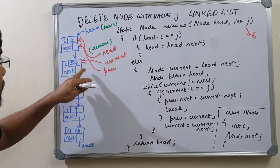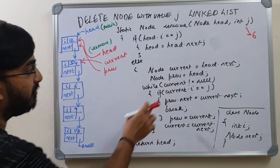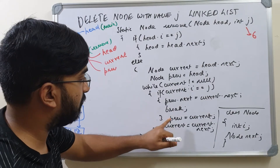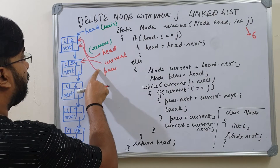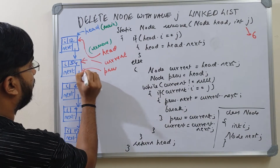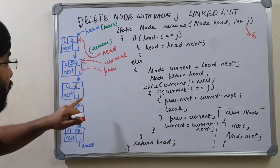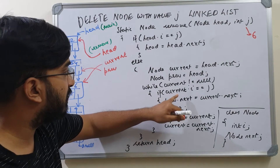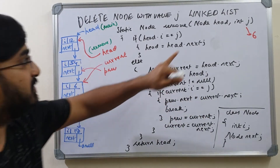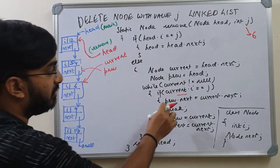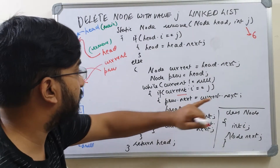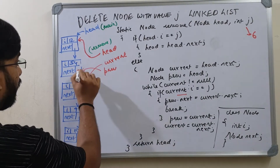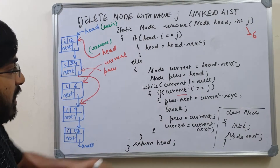Current is not equal to null — true — so we enter the loop. Current dot i is 54, j is 6, not equal, so we skip the if body. Previous becomes current (pointing to 54), and current moves to current dot next (pointing to 6). We check again: current is not null — true. Current dot i is 6, j is 6 — we have a match. We set previous dot next equals current dot next, so the node containing 54 now links directly to the node containing 9.